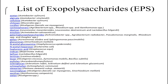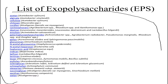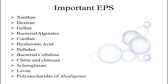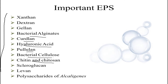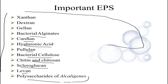There is a comprehensive list of exopolysaccharides — you can pause the video to check all the scientific names provided. Some of the most important EPS include xanthan, dextran, gellan, bacterial alginates, curdlan, hyaluronic acid, pullulan, bacterial cellulose, chitin, chitosan, scleroglucan, levan, and polysaccharides of Rhizobium/Agrobacterium. Some of these will be discussed in this video and the next.